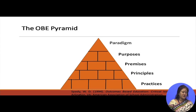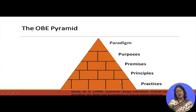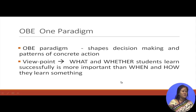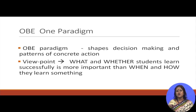This is the OBE pyramid by Spady. In this outcome based education pyramid there is one paradigm, two purposes, three premises, four principles and five practices. The one paradigm shapes decision making and patterns of concrete action. The viewpoint is: what and whether students learn successfully is more important than when and how they learn something. When and how they are learning depends on the learner, but what they are learning and whether they are learning — that is what is important.